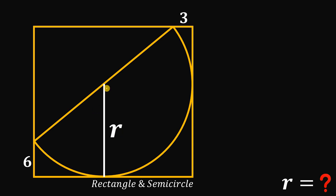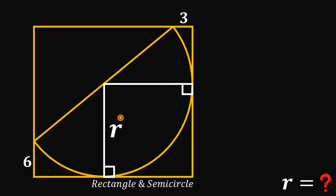One thing to notice here is that from the center of the semicircle down to the point of tangency, we create a 90-degree angle. We can do the same thing on the other side of this rectangle — if we draw the radius directly to the point of tangency, we also create a 90-degree angle. To solve for the value of radius r, let's extend this radius.